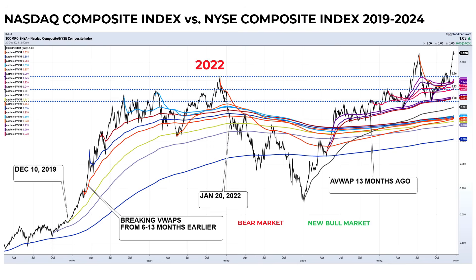This is where the bear market starts. The NASDAQ peaks in November of 2021. The S&P 500 peaks early in January 2022. If we look at the average price of this ratio pinned to those levels, very early in 2022 we were breaking those lines — lines anchored to points six to thirteen months prior. That's not what we have in the present day. The line anchored thirteen months ago is turning up on the right side of the screen in a bullish manner.